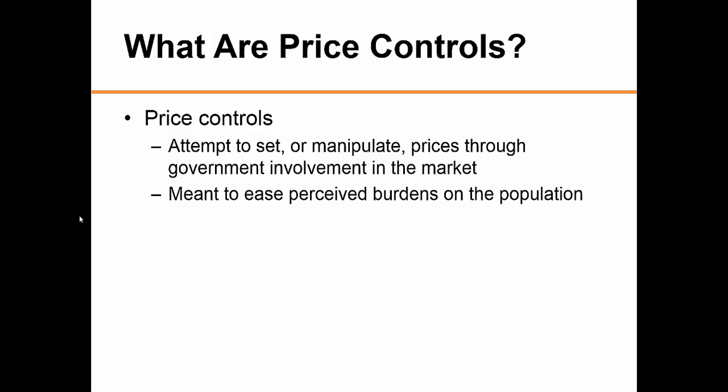Price control is basically an attempt to set or manipulate prices through government intervention in the markets. In most cases, price controls are enacted to ease perceived burdens on the population. For example, when President Nixon imposed price controls in 1971, he was trying to help U.S. citizens from the threat of inflation, accomplishing this by imposing a 90-day wage and price freeze, which was greeted with cheers from consumers who had grown wary of rapidly escalating prices and believed they were being gouged.